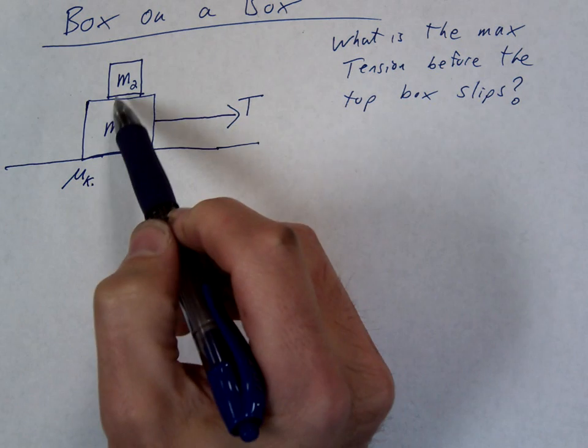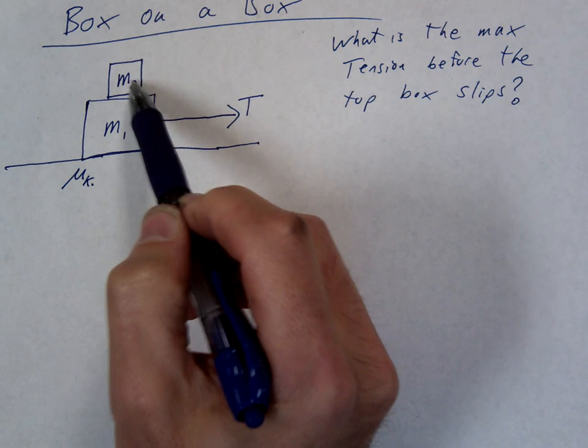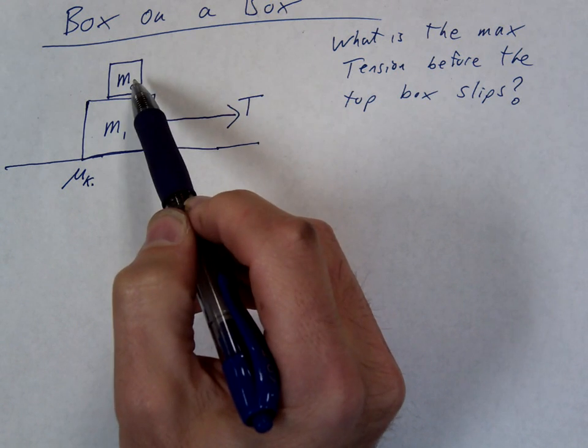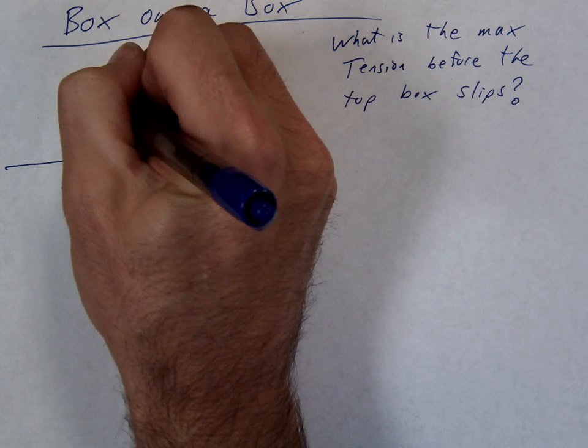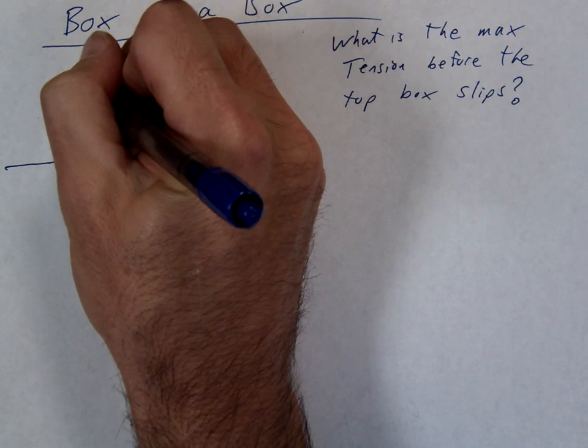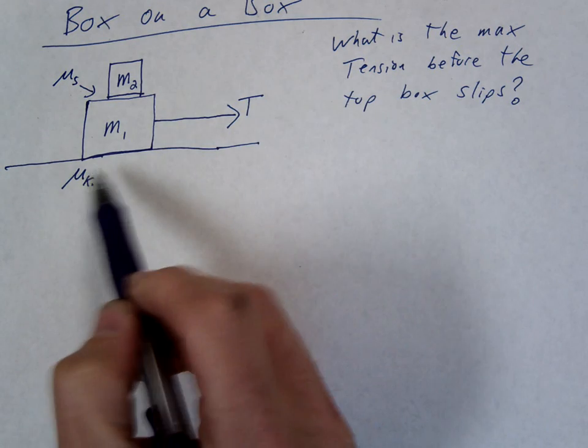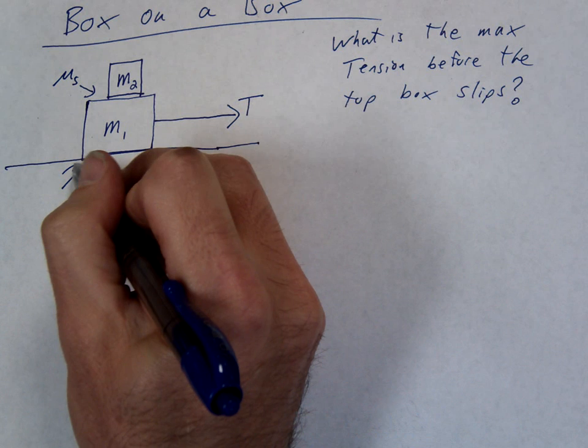Then this one on here, what's the force that keeps the box on? Static. So up here there's going to be a mu S. There's a mu K down here at the bottom and a mu S at the top.